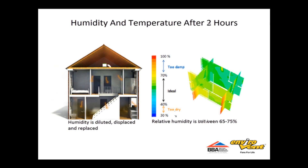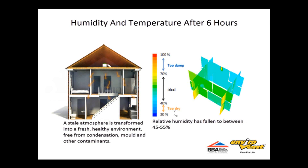After three hours, the dilution and displacement process is well underway. The quality of the air is starting to improve as the fresh filtered air begins to dilute, displace and replace the airborne contaminants. After six hours, the relative humidity is at 50% and is now stable. The air in the property is clean and fresh. The warm air that is normally lost at ceiling level is being redistributed, making the property much more energy efficient.